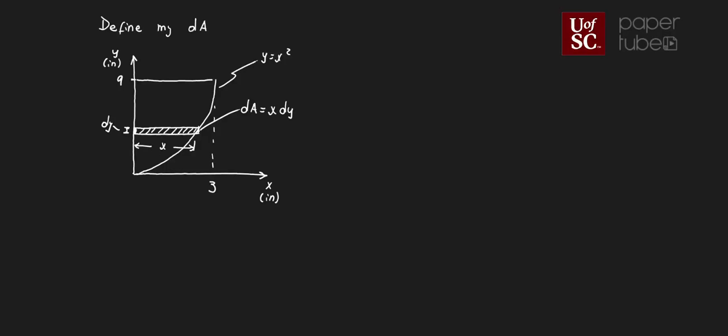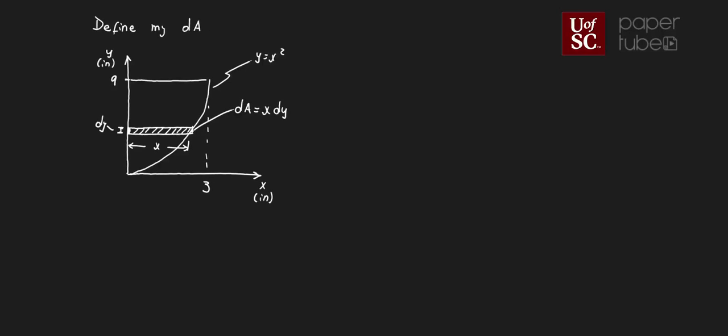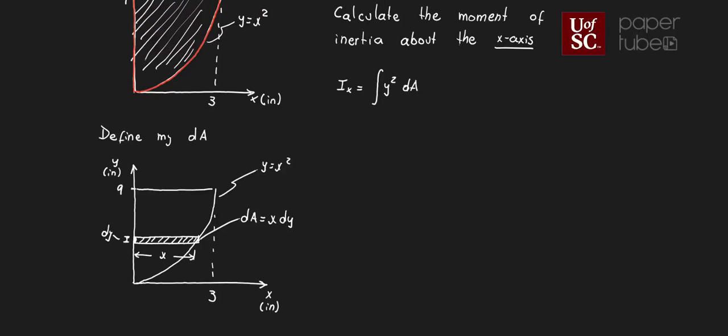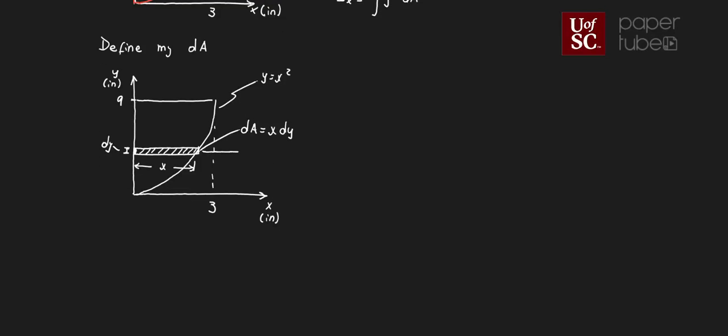So if we have the definition of moment of inertia that we drew on the top, it's y squared dA. What is that y squared? Well, that y is going to be the distance from the differential of area to my x-axis. That's going to be my y.